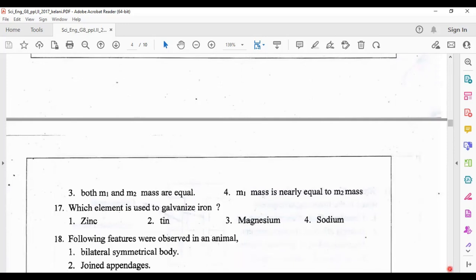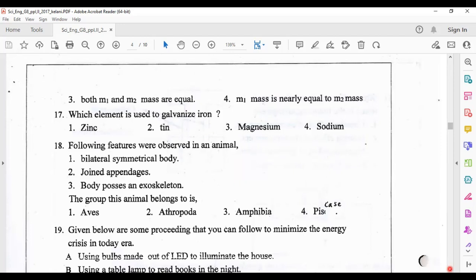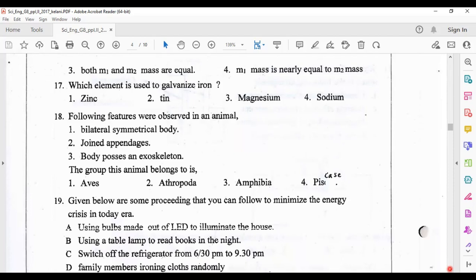Question 17: which element is used to galvanize iron? Answer one, zinc. Question 18: following features were observed in an animal - bilaterally symmetrical body, jointed appendages, body possesses an exoskeleton. The group of animal belongs to this is arthropoda, answer two.